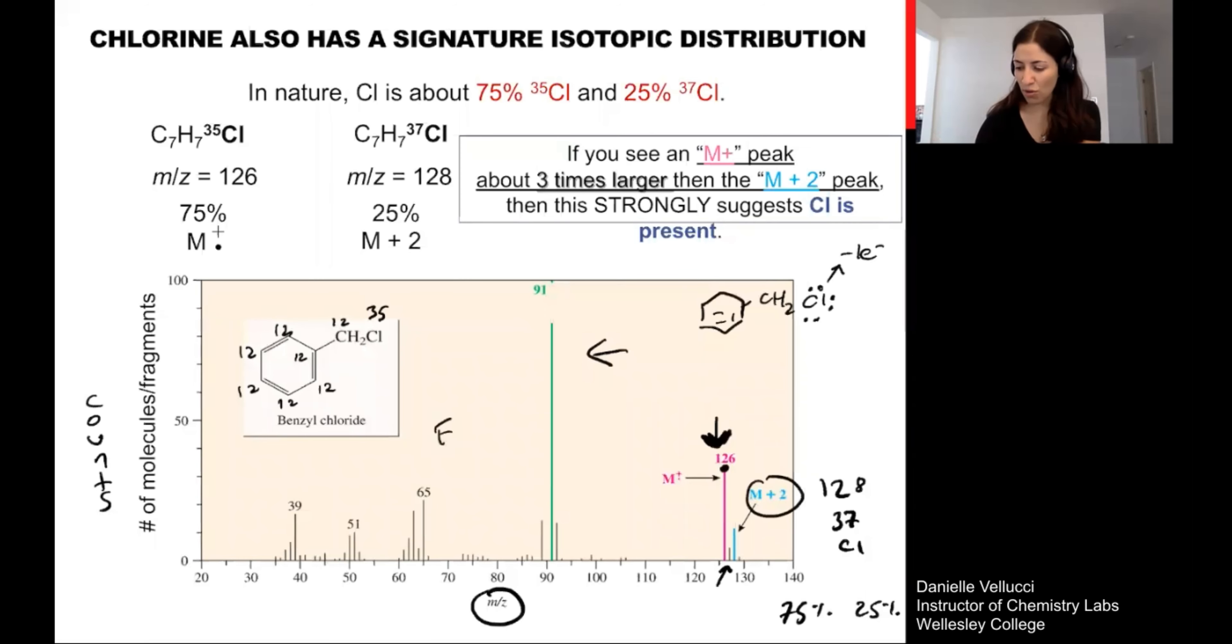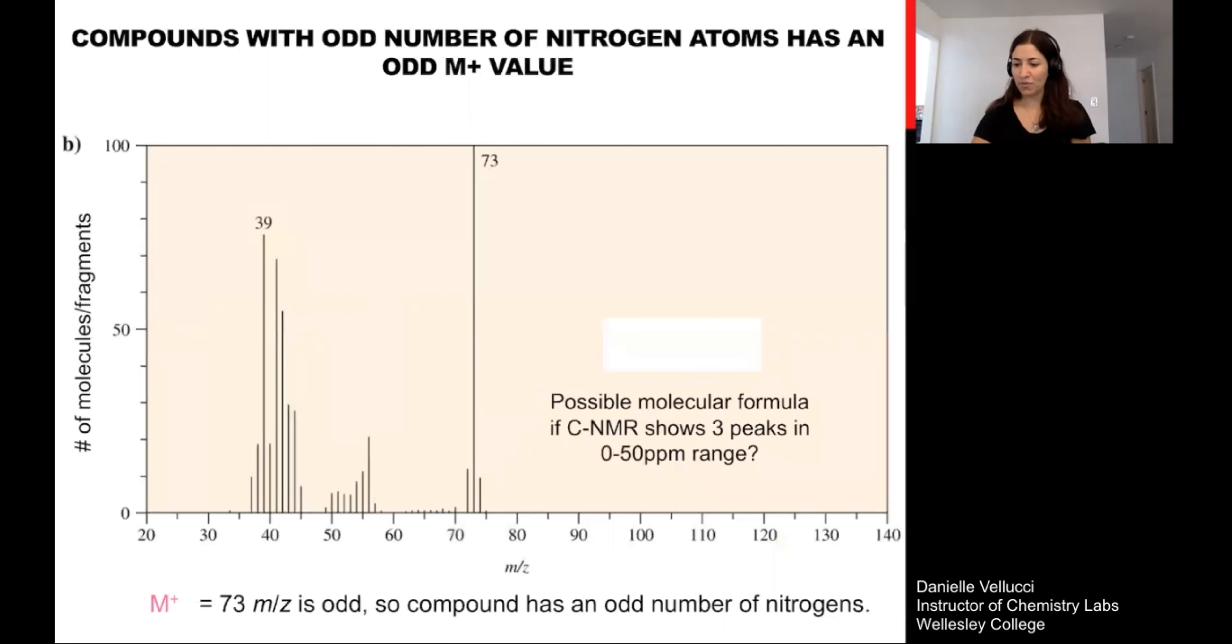So when you're identifying an unknown, provided that the data is clean and off of a clean instrument, the highest number that you observe is most likely to represent your intact molecule where nothing has begun to break apart. As you start to see lower and lower numbers, you're most likely observing fragmentation.